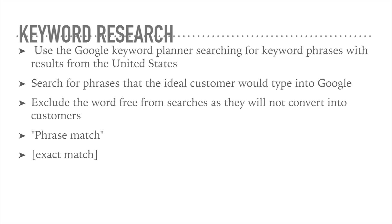You can use the Google Keyword Planner to search for keyword phrases that people actually search for — that's discussed in the SEO lecture in the library. Search for the phrases that your ideal customer would type into Google, which goes back to buyer keywords where people type in things like 'affordable,' 'cheap,' or 'how to' along with your industry niche, depending on what kind of product you're trying to affiliate market.